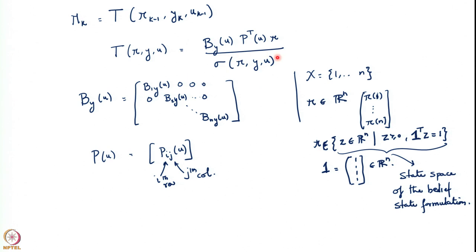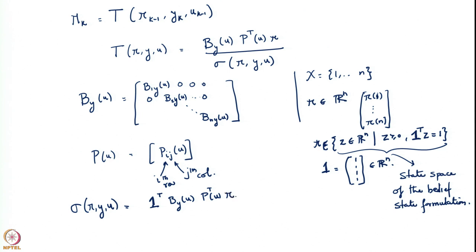The denominator of T is sigma(pi, y, u). This is simply the integral — or in the finite-state case, the summation — of the numerator over all states. Explicitly, sigma(pi, y, u) = 1^T · B_y(u) · P^T(u) · pi. So sigma is a scalar normalizing constant that ensures the result is a valid probability distribution.